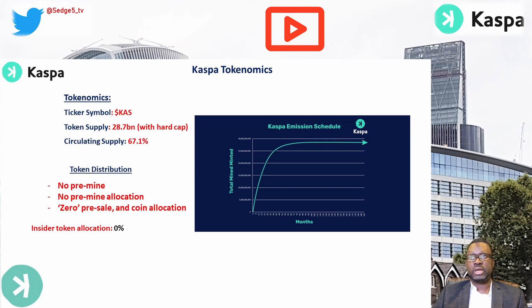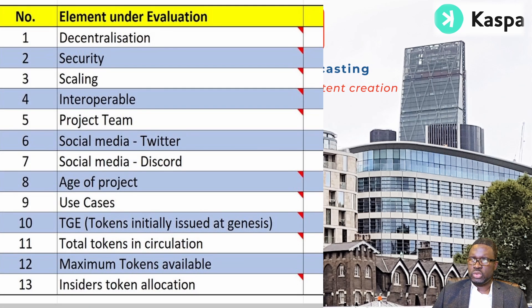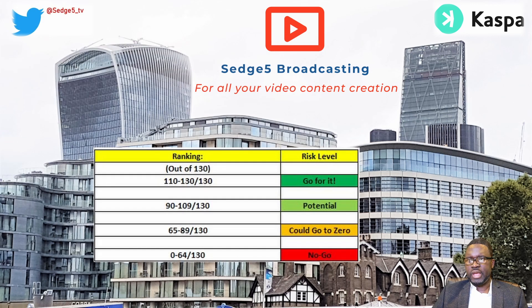As part of our DYOR risk evaluation, we allocate scores to 13 elements: decentralization, security, scaling, interoperability, project team, social media presence via Twitter and Discord, age of the project, use cases, tokens issued at project launch, tokens in circulation, maximum tokens available, and insider token allocation. We aggregate those scores and classify the result under four risk categories: 'Go For It,' 'Potential,' 'Could Go to Zero,' and 'Novel.'